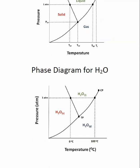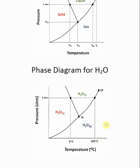Now let's look at typical examples. Here is the phase diagram for water, with solid, liquid, and gaseous phases. The triple point is where the three curves meet, and the critical point is at the end of the vaporization line. At one ATM, we cross the fusion line at 0°C — that's the normal freezing point — and we cross the vaporization line at 100°C — that's the normal boiling point.